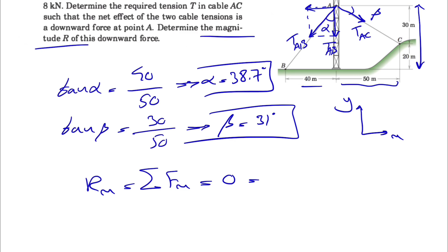For Rx, we have the X component of TAB, which is negative. We know that TAB is 8, so 8 times sine of alpha will be our X component, so sine of 38.7 degrees.